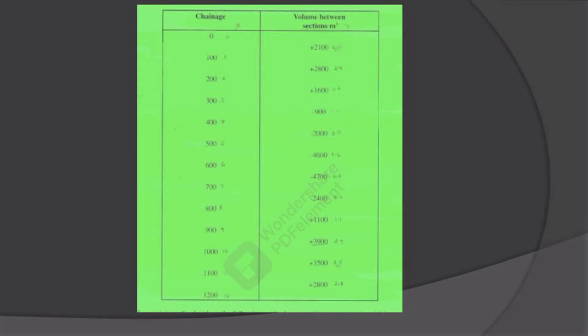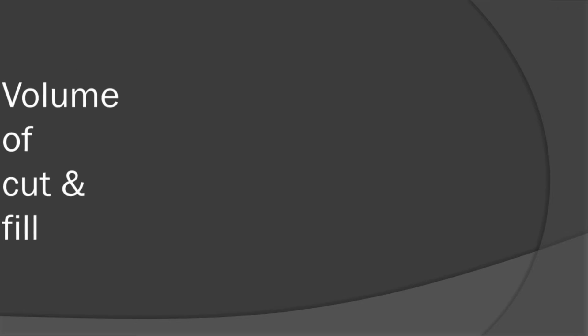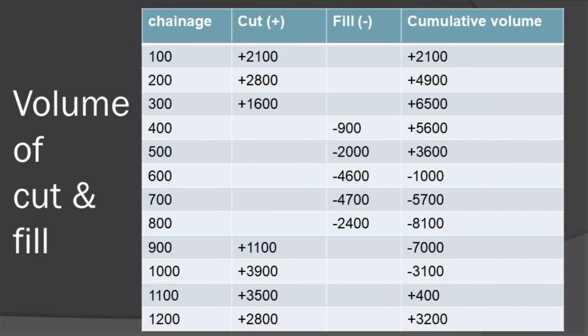First we make a table of four columns, on which the first will be where our chainages stay, second is for cut, third for fill, and the last columns are for cumulative volumes. Starting with chainage at 100 meters, our volume has a positive sign hence we place it on the second column.